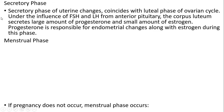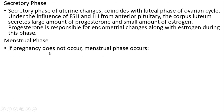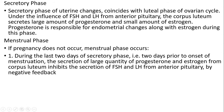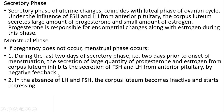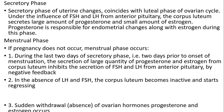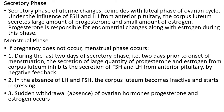In the menstrual phase, if pregnancy does not occur, the menstrual phase occurs. During the last two days of the secretory phase, that is two days prior to onset of menstruation, secretion of large quantities of progesterone and estrogen from the corpus luteum inhibit the secretion of FSH and LH from the anterior pituitary by negative feedback. The absence of LH and FSH causes the corpus luteum to become inactive and start regressing. Sudden withdrawal of ovarian hormones, progesterone and estrogen, leads to menstrual bleeding.